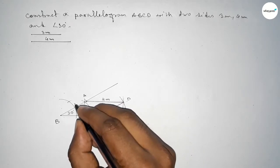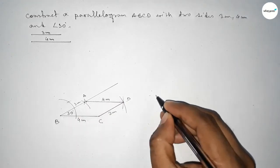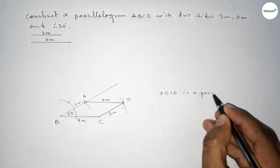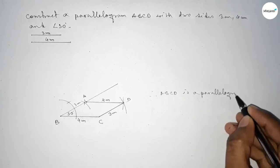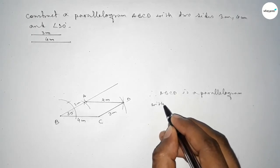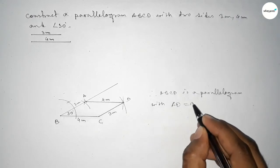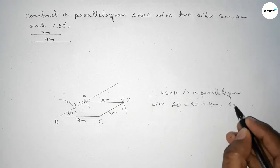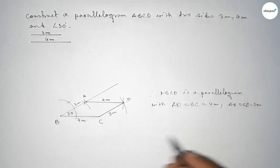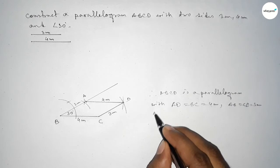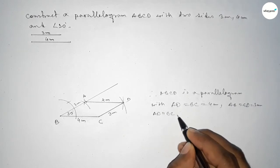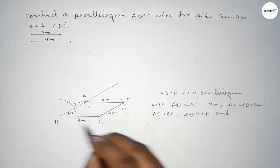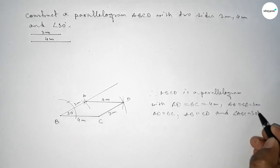This side is 4 centimeters, and its opposite side is also 4 centimeters. This side is 3 centimeters and its opposite is also 3 centimeters. Therefore, ABCD is a parallelogram with AD equal to BC equal to 4 centimeters, AB equal to CD equal to 3 centimeters, and AD parallel to BC and AB parallel to CD.